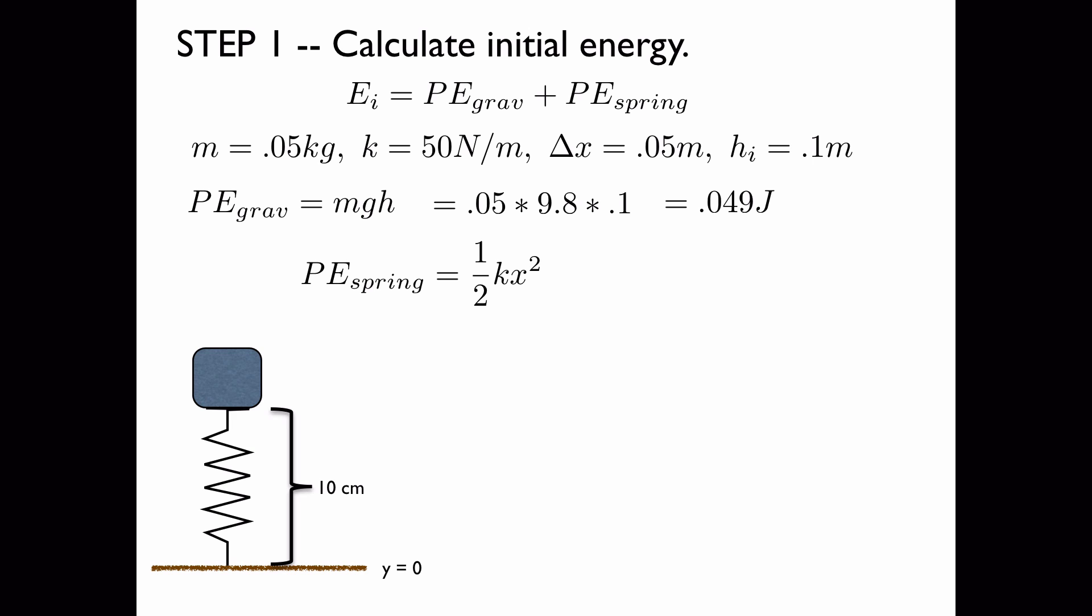Now the potential energy stored in the spring is given by this equation, 1 half kx squared, where x is the displacement from equilibrium. In the case above, we denoted it as delta x. So we plug in the numbers, and we get our result.